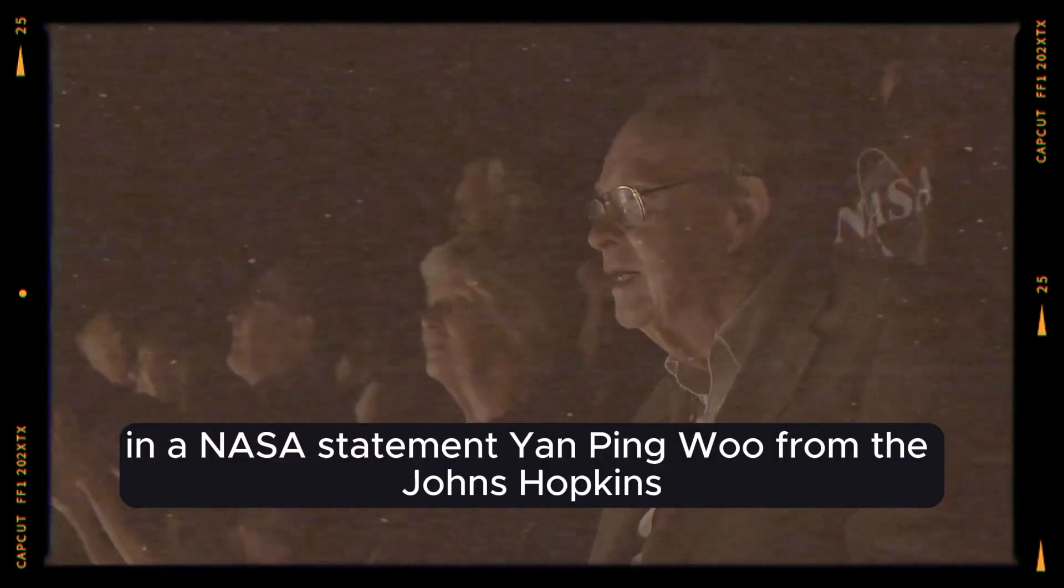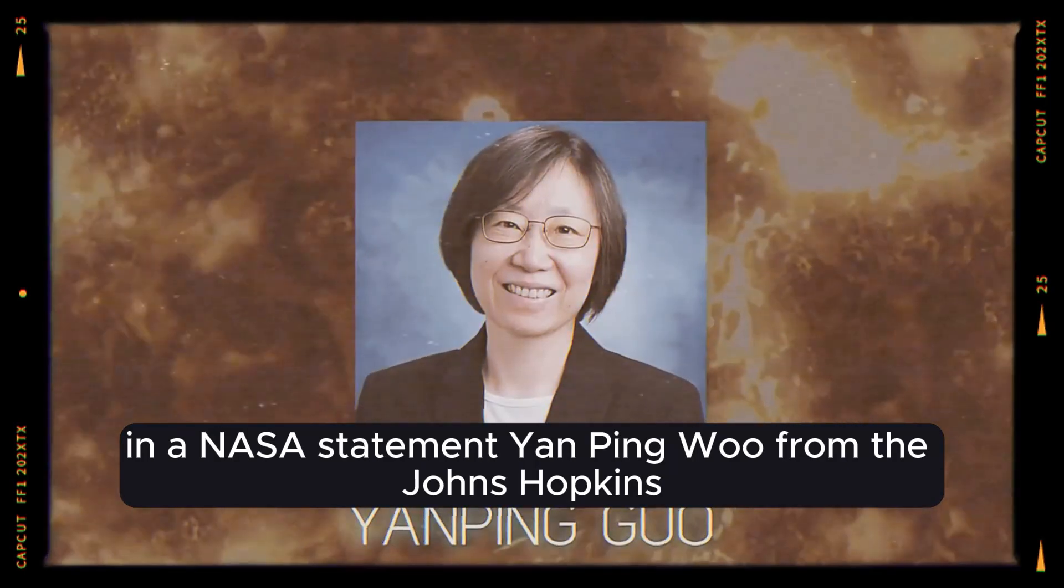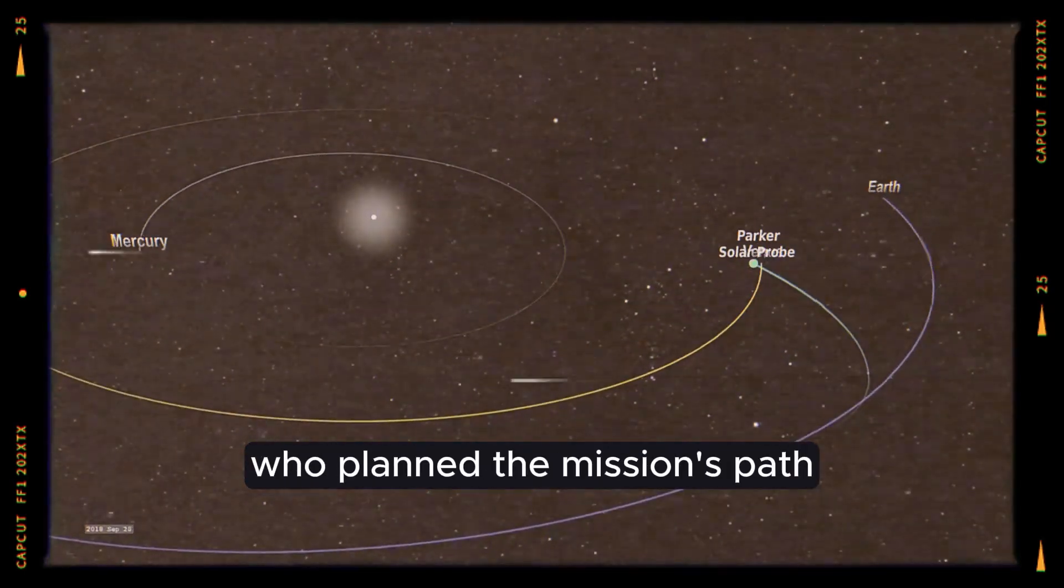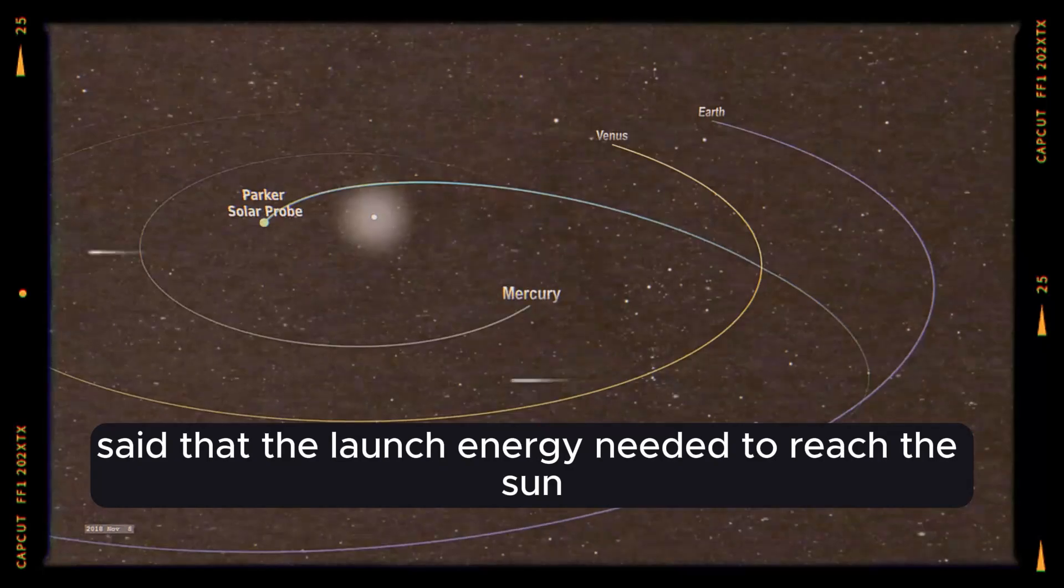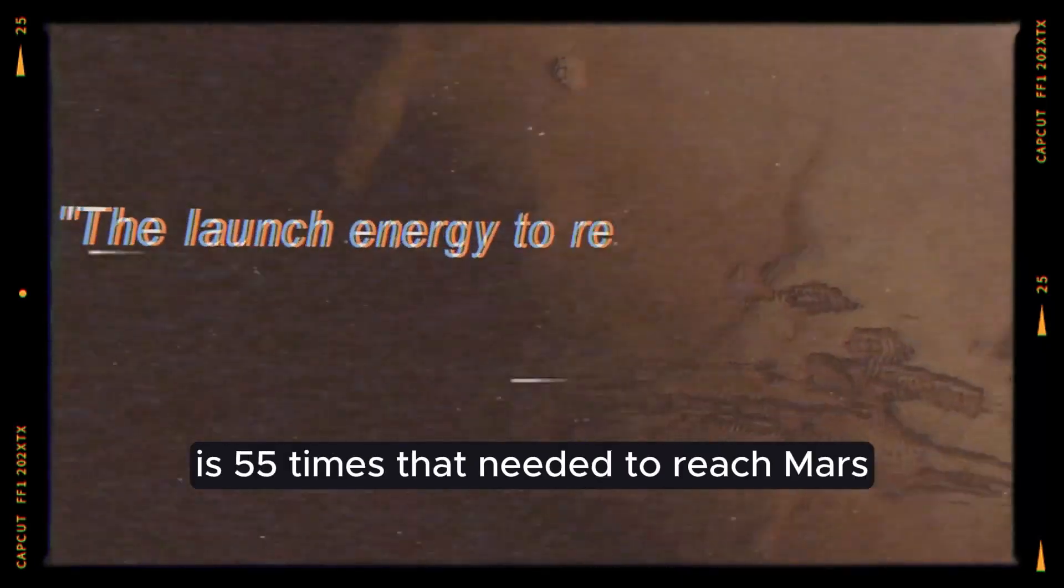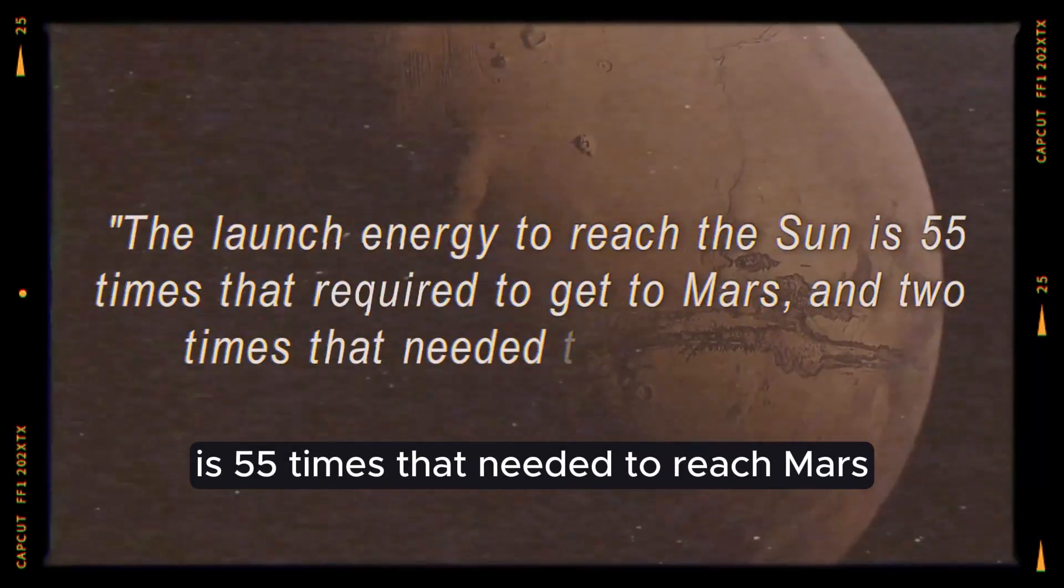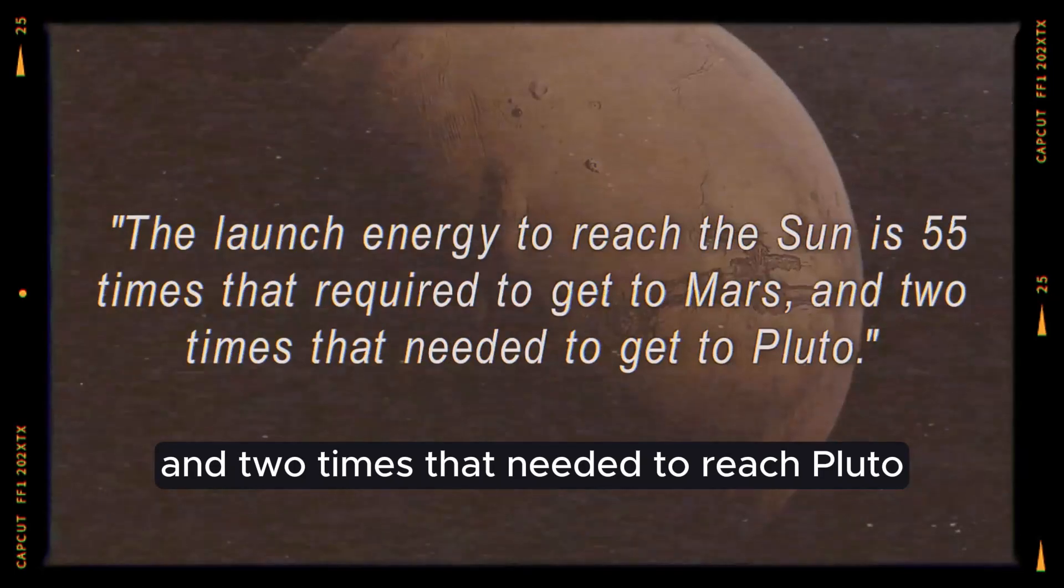In a NASA statement, Yen Ping-Woo from the Johns Hopkins Applied Physics Laboratory, who planned the mission's path, said that the launch energy needed to reach the sun is 55 times that needed to reach Mars and two times that needed to reach Pluto.